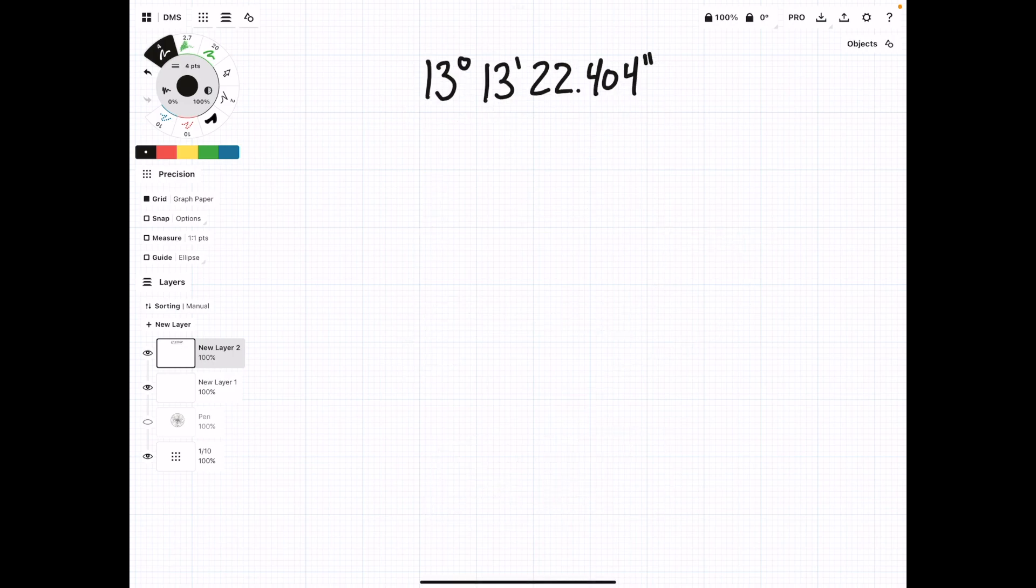Now, we have 13 degrees, 13 minutes, and 22.404 seconds. So, again, how we're going to convert this is we're going to drop down our degrees into our answer. Then, we're going to divide this minute part by 60. 13 divided by 60. And we're doing this because there are 60 minutes in a degree. This gives us 0.216667.